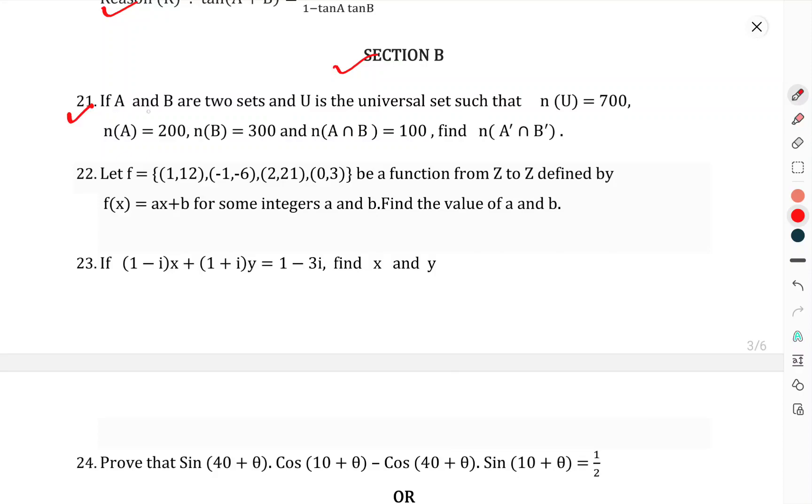Now we come to Section B. Question number 21: If A and B are two sets, U is the universal set such that n(U) equals 700, n(A) equals 200, n(B) equals 300, and n(A ∩ B) equals 100, then find n(A' ∩ B'). Question number 22: Let f = {(1,2), (-1,-6), (2,2), (1,0), (3)} be a function of Z to Z defined by f(x) = ax + b for some integers a and b. Find the value of a and b.